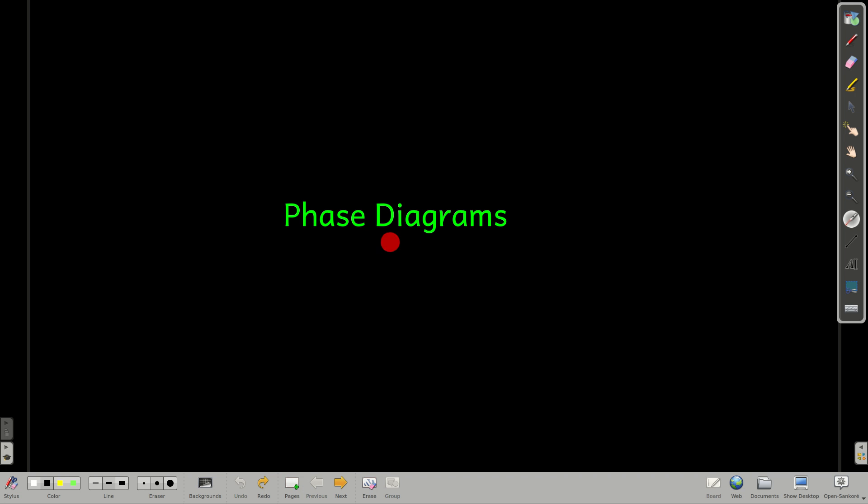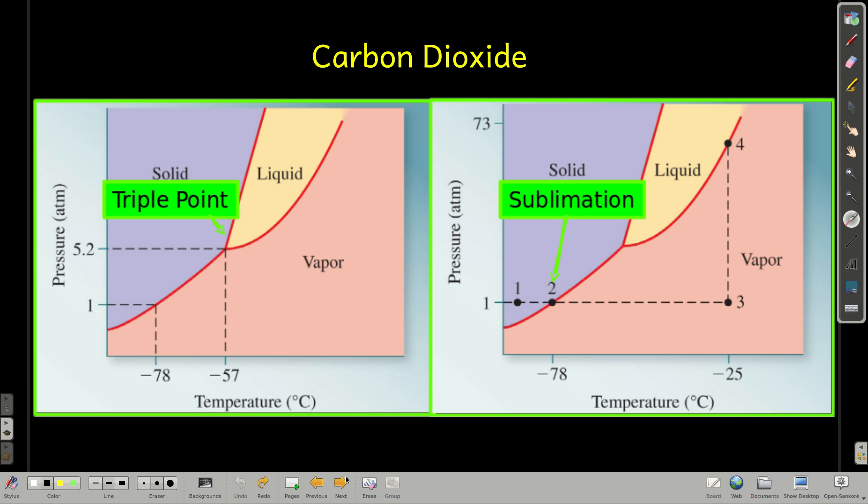This module talks about phase diagrams. So what is a phase diagram? It's a graph for a substance of the pressure versus the temperature, and on it, it shows the different phases of that substance at these different combinations of temperature and pressure.